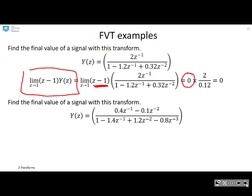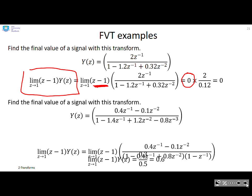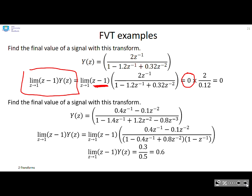What about this one here? This one, you can see it does have a pole at 1. I've done the factorization here so you can see it. When I now apply the final value theorem, you can see that this factor z minus 1 is going to cancel this factor here, which is also z minus 1. So you're now going to get a finite limit, which is 0.6.